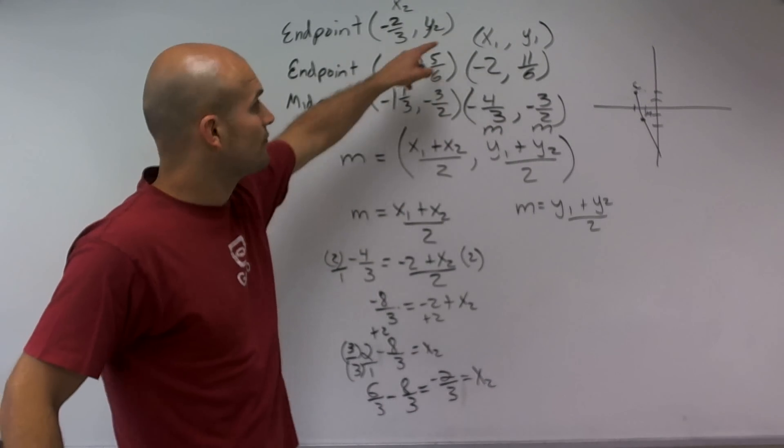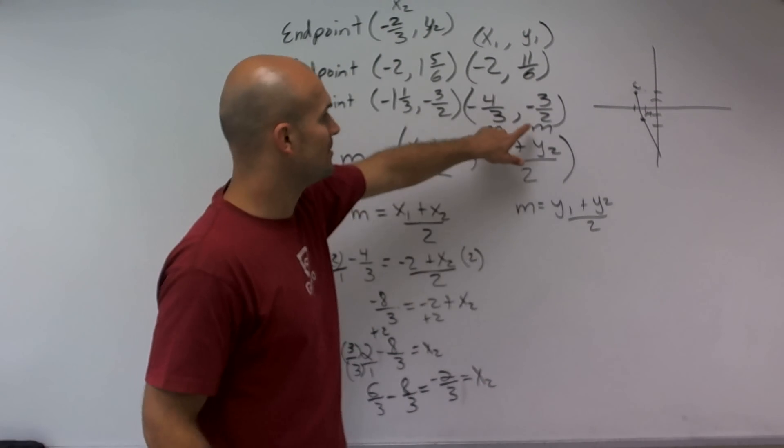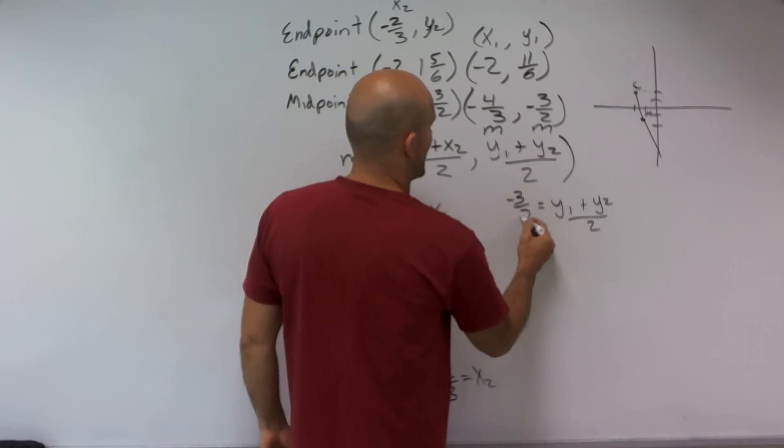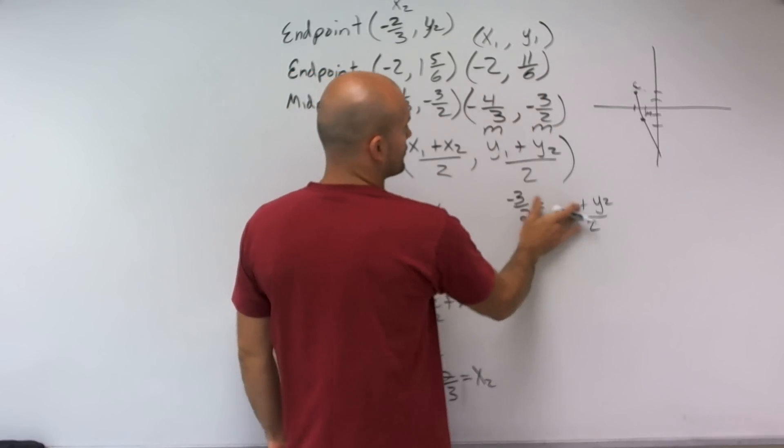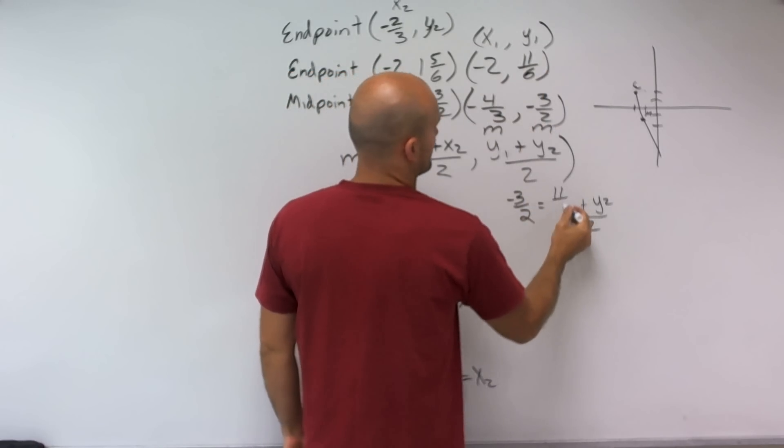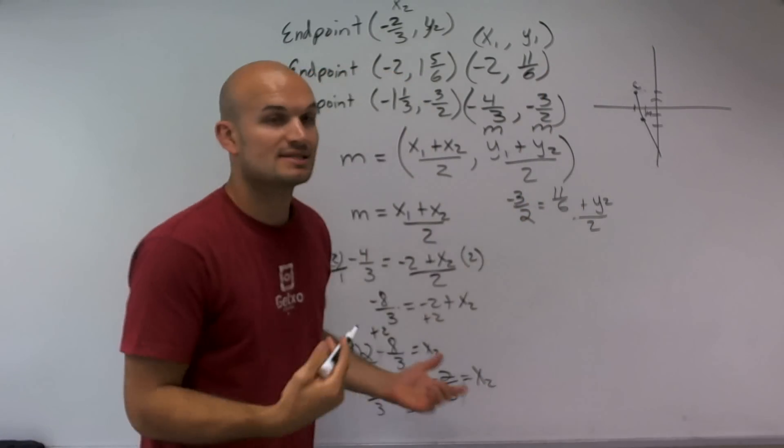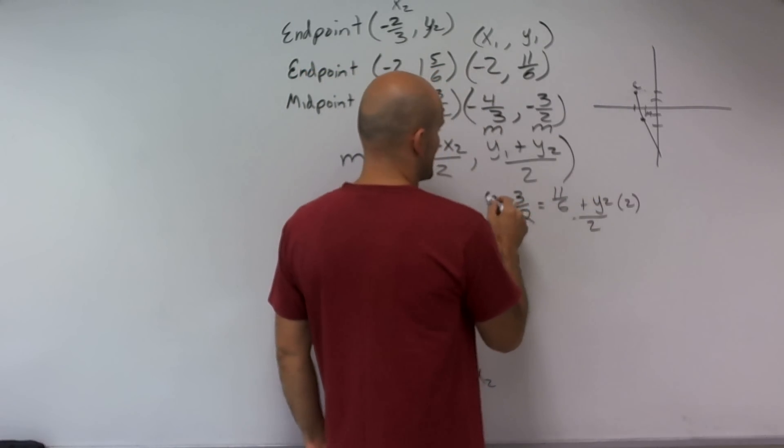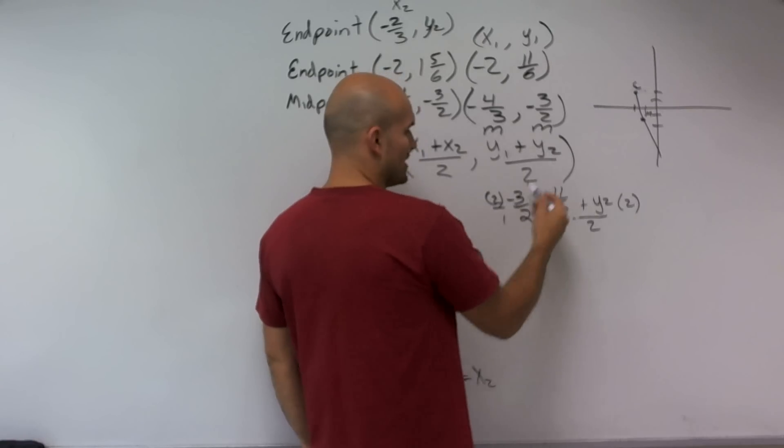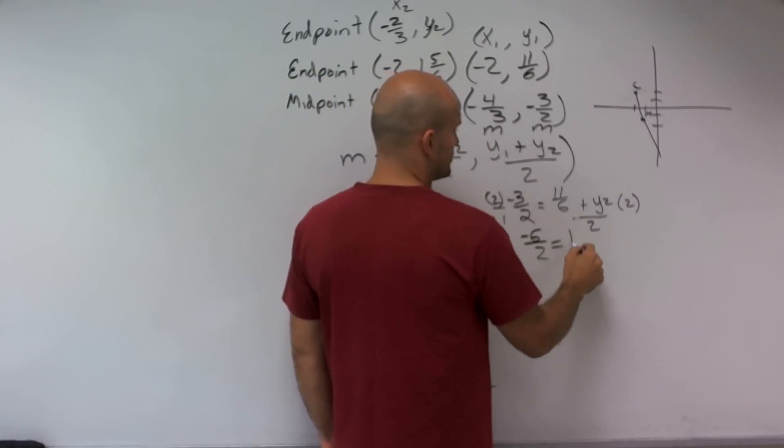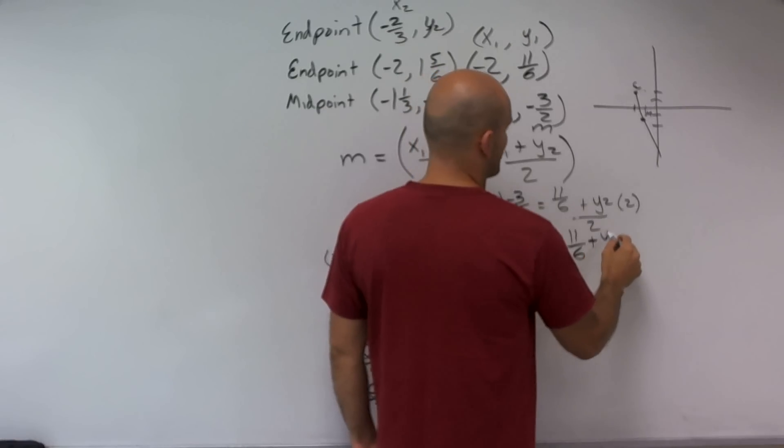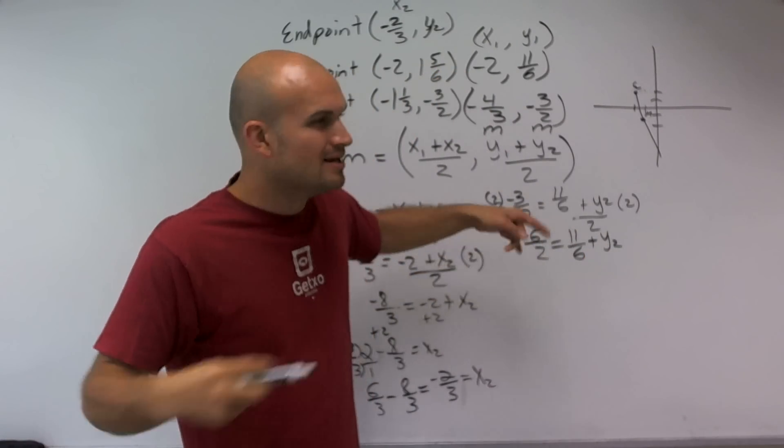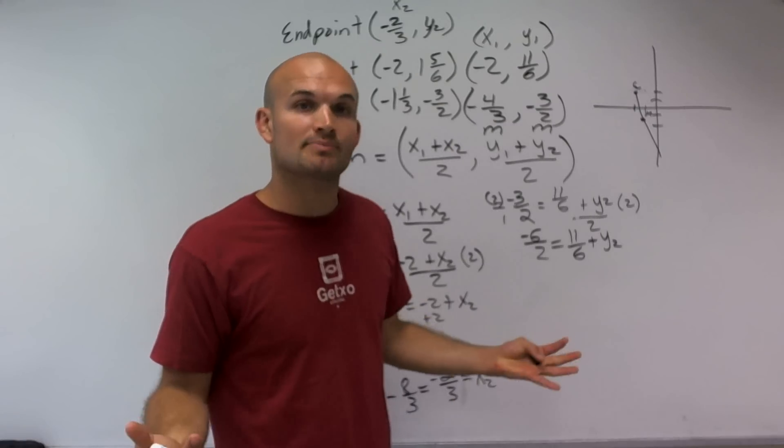So let's go ahead and do that now for y2. The exact same process. M is my midpoint for the y coordinates, which will be negative 3/2. Y1 is going to be the y coordinate, which will be 11/6. So the same thing. I'm going to solve for y2. I undo my operations, multiply by 2 on both sides. Negative 6/2 equals 11/6 plus y2. I know you can leave this as a whole number.